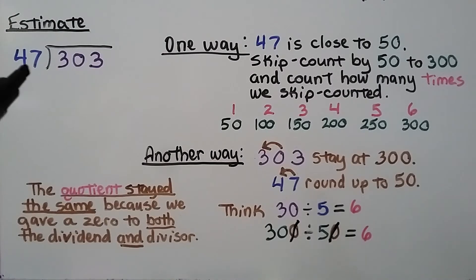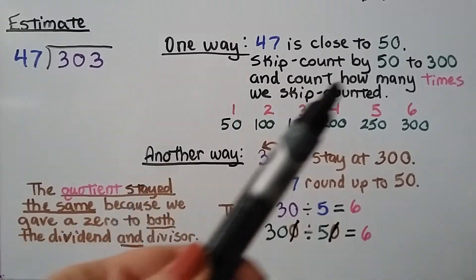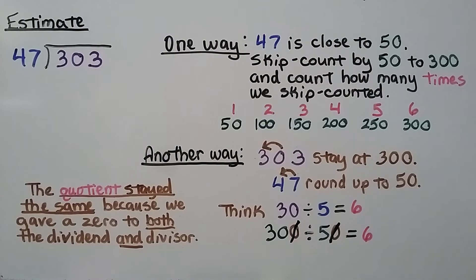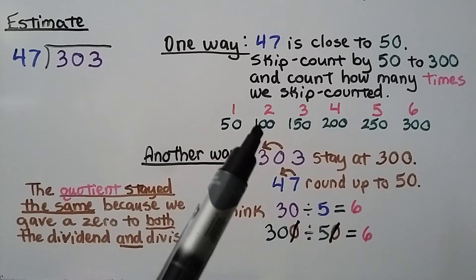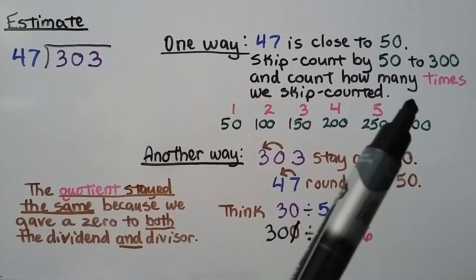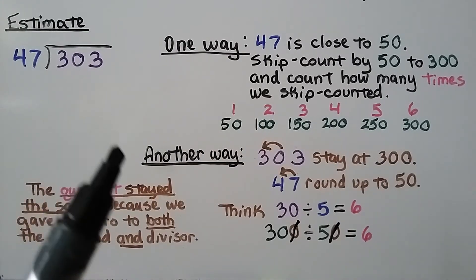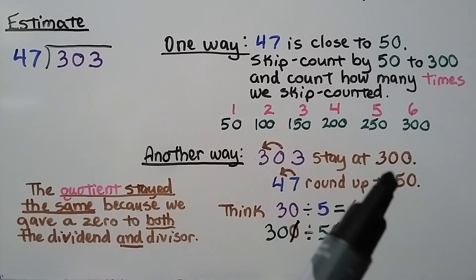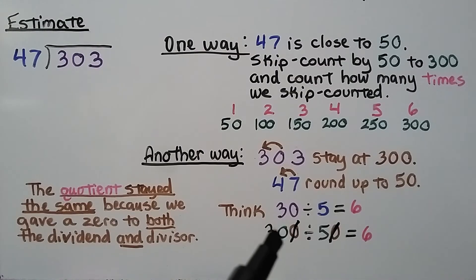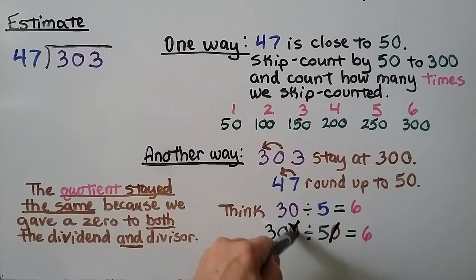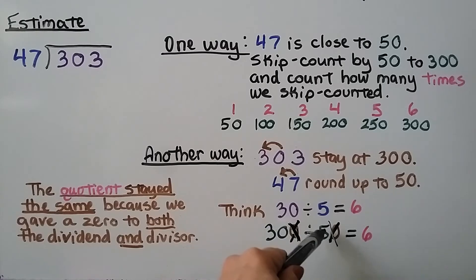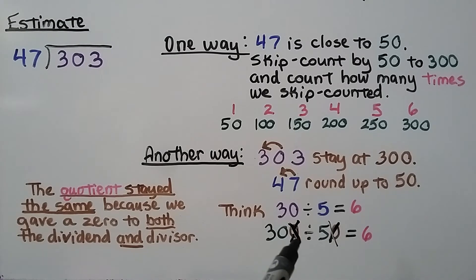To estimate 303 divided by 47, one way is to note that 47 is close to 50 and skip count by 50 to 300: 50, 100, 150, 200, 250, 300 — that's 6 times, so the quotient is about 6. Another way: round 303 to 300 and 47 to 50, then use the basic fact 30 divided by 5 equals 6. Crossing off a zero from both 300 and 50 gives 30 divided by 5, so the quotient stays 6.